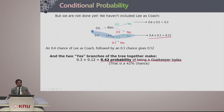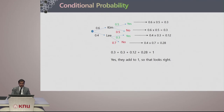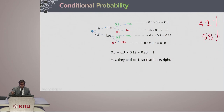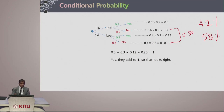You can see how one event is affecting another. You are talking about being a goalkeeper, but it depends on other factors. The overall probability of not being a goalkeeper is 0.58 — a 58 percent chance you are not. When you add all these up, you get 1, the overall probability.